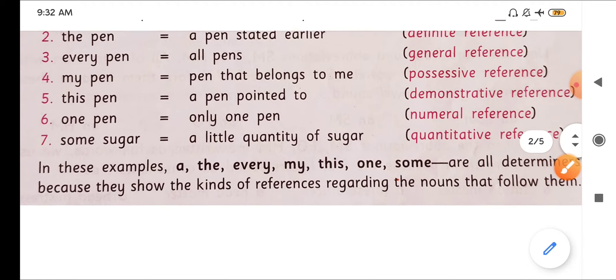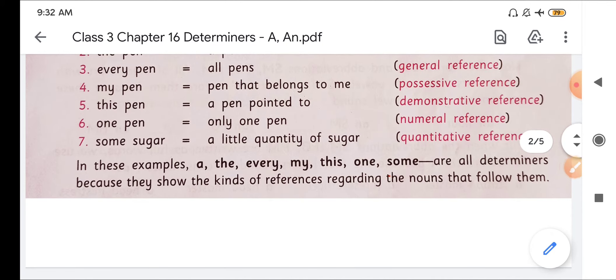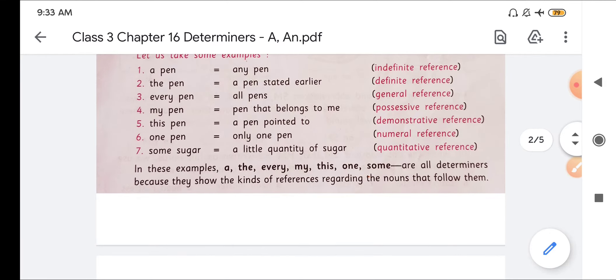So here are these things. Then these examples, a, the, every, my, this, one, some, are all determiners because they show the kinds of reference regarding the nouns that follow them.